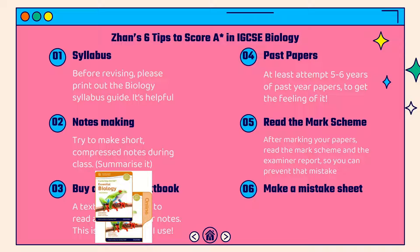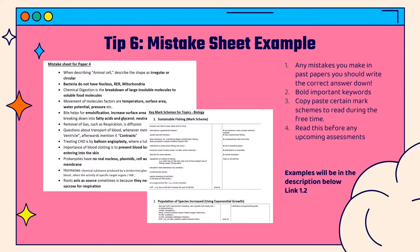Tip six is to make a mistake sheet. Every time you make a mistake in any paper, write it down in a Word document with the correct answer. Bold the important keywords — for example, 'bacteria do not have a nucleus, aria and mitochondria.' I always read my mistake sheet before assessments and during free time. I will link an example below so you can see how I do it and get inspiration.